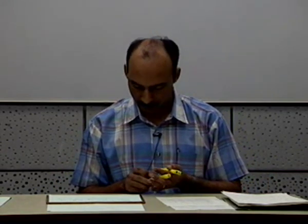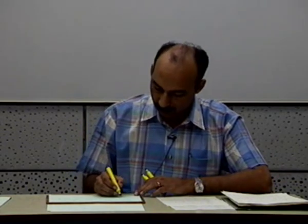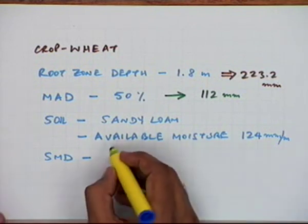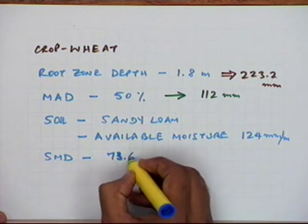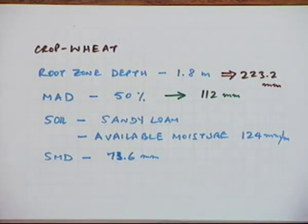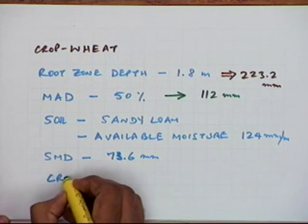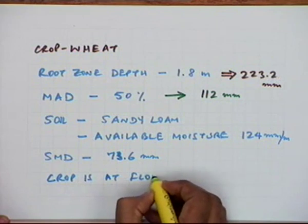If you go beyond this deficit level — that is, if you let the soil moisture deplete below this level — there will be some impact on the crop yield. The actual soil moisture deficit (SMD) prevailing at the time of irrigation is 73.6 millimeters. The crop is at the flowering stage.